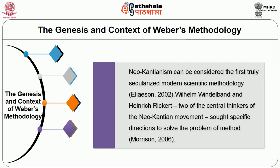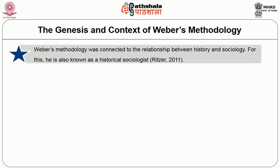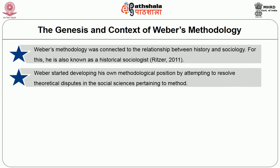Kantianism can be considered the first truly secularized modern scientific methodology. William Windelband and Heinrich Rickert, two central thinkers of the Neo-Kantian movement, sought specific directions to solve the problem of method. These two scholars seem to have had tremendous influence on Weber's thinking about the methodology of social sciences, besides the influence of Wilhelm Dilthey and Georg Simmel, all close friends of Weber. Weber's methodology was connected to the relationship between history and sociology, which is why he is also known as a historical sociologist.